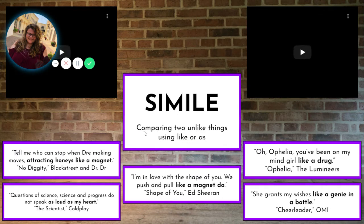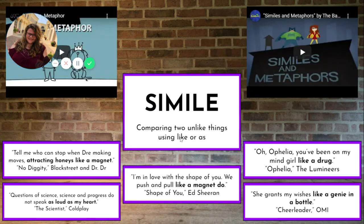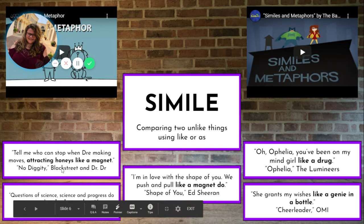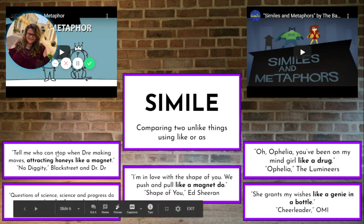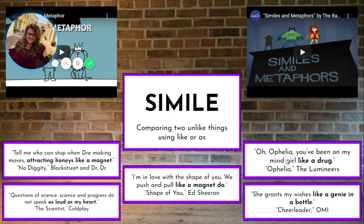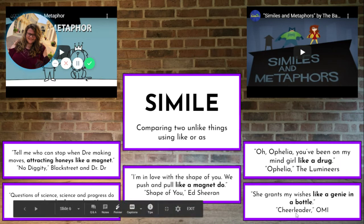Similes compare two unlike things the same way as metaphors, but now we're adding 'like' or 'as.' Think about 'No Diggity': 'attracting honeys like a magnet' — that 'like a magnet' is a simile. From Ed Sheeran's 'Shape of You': 'We push and pull like a magnet do.' And 'Ophelia, you've been on my mind like a drug.' Also: 'She grants my wishes like a genie in a bottle.' They're all using 'like' or 'as.'